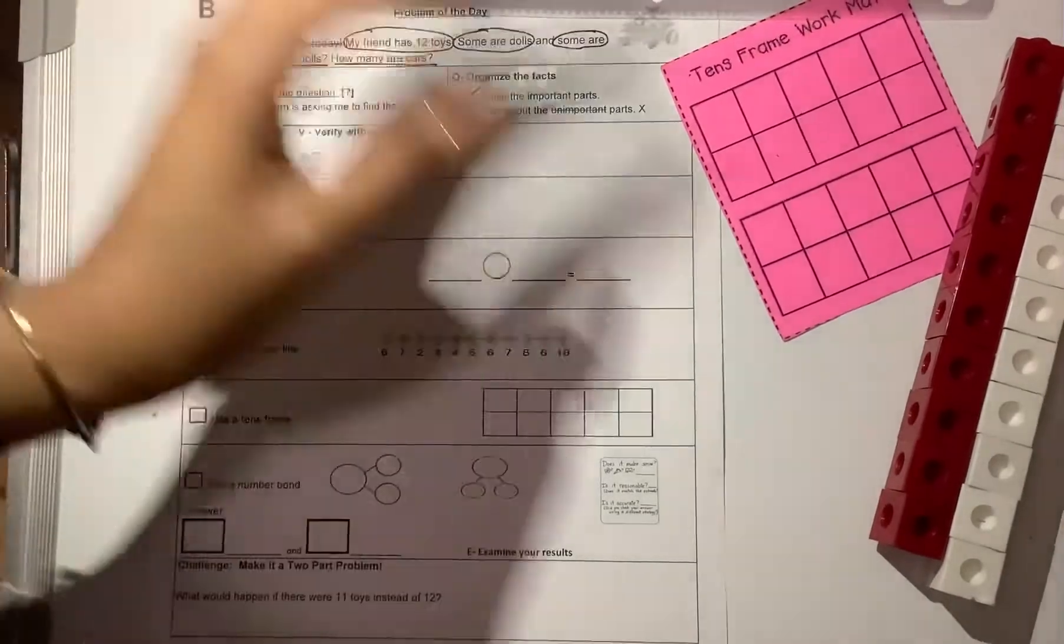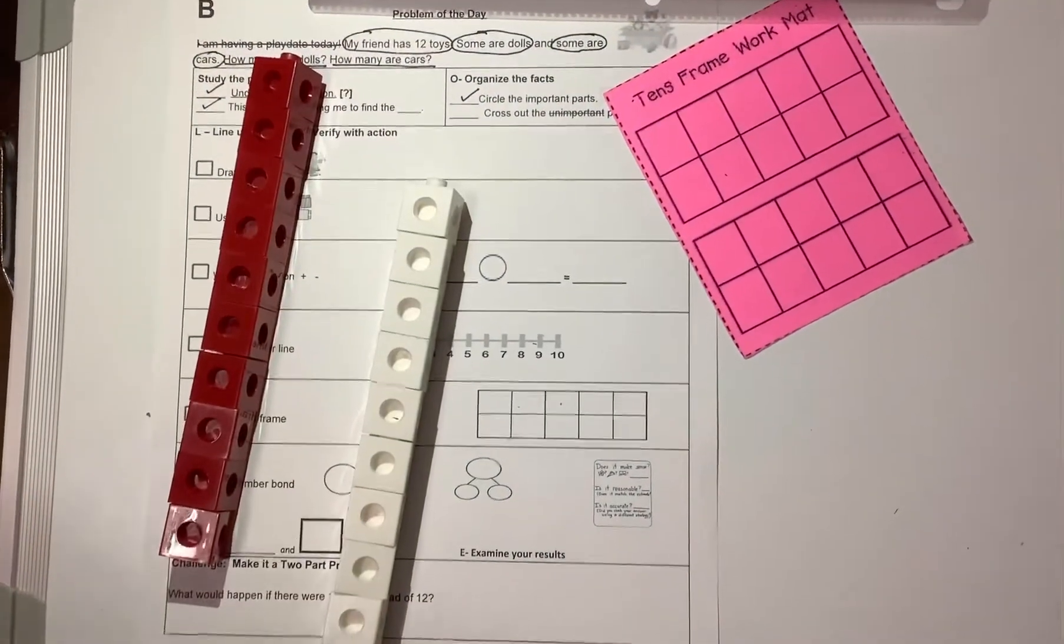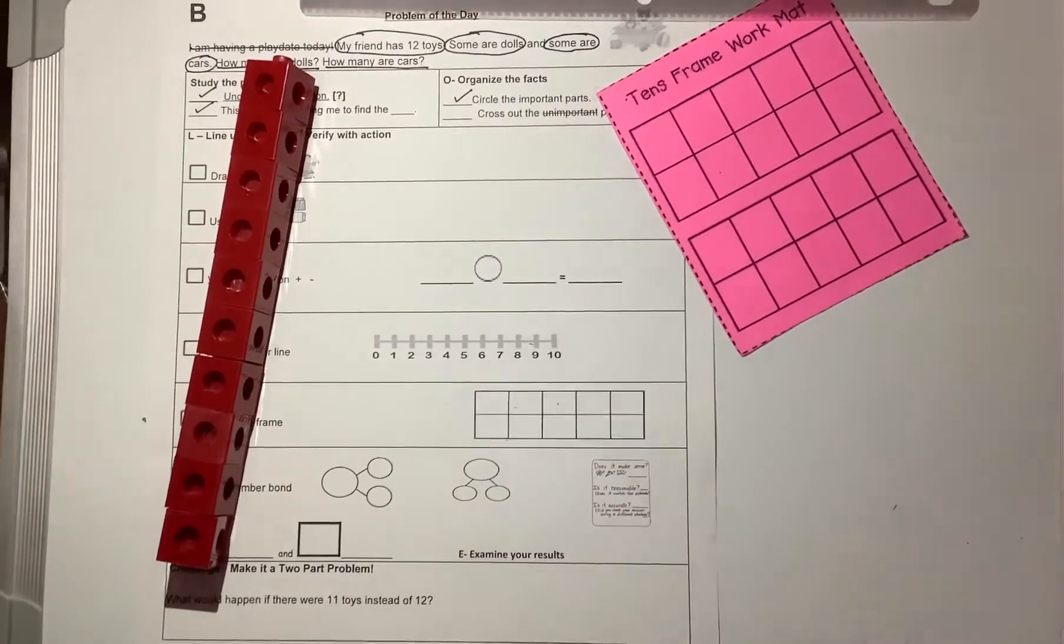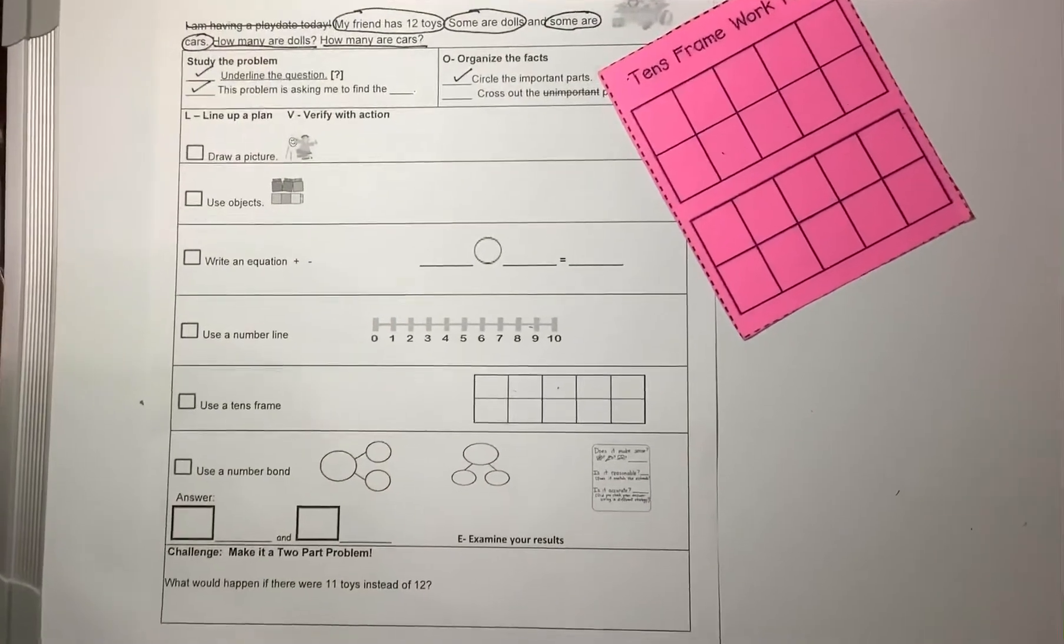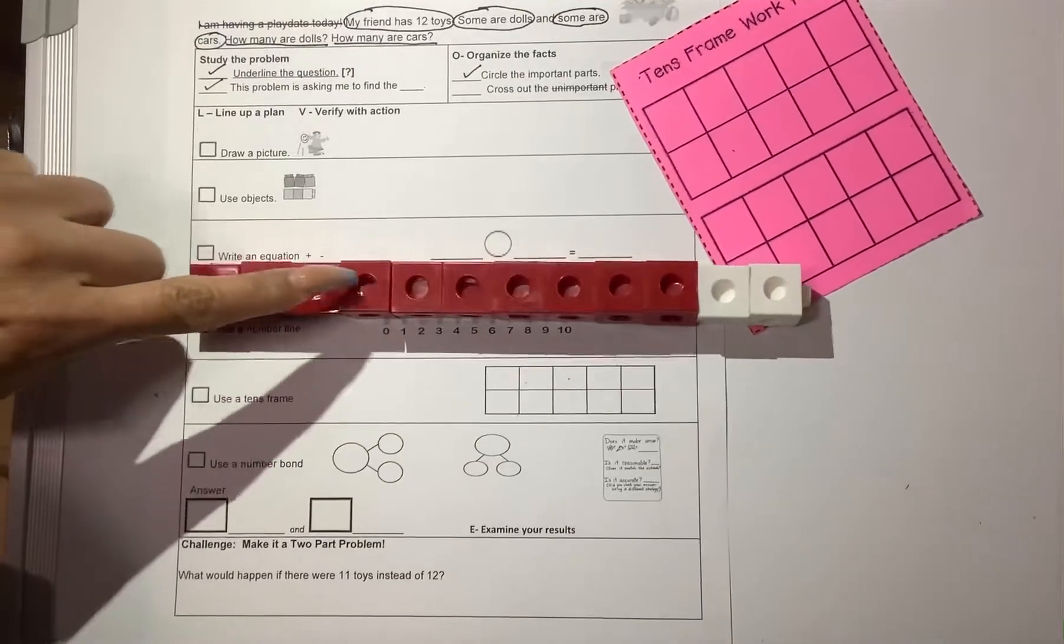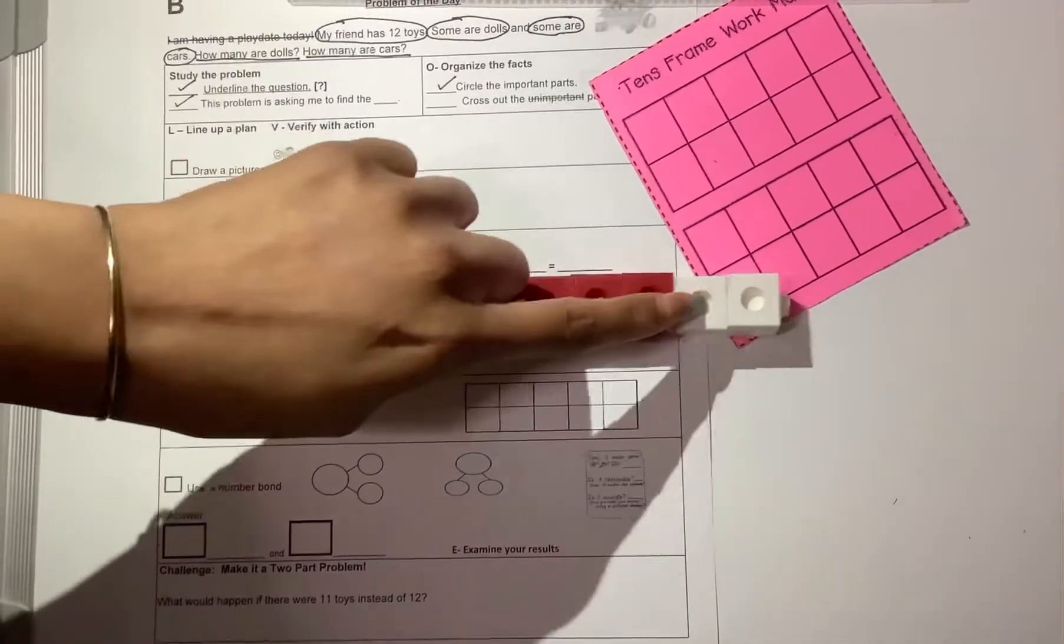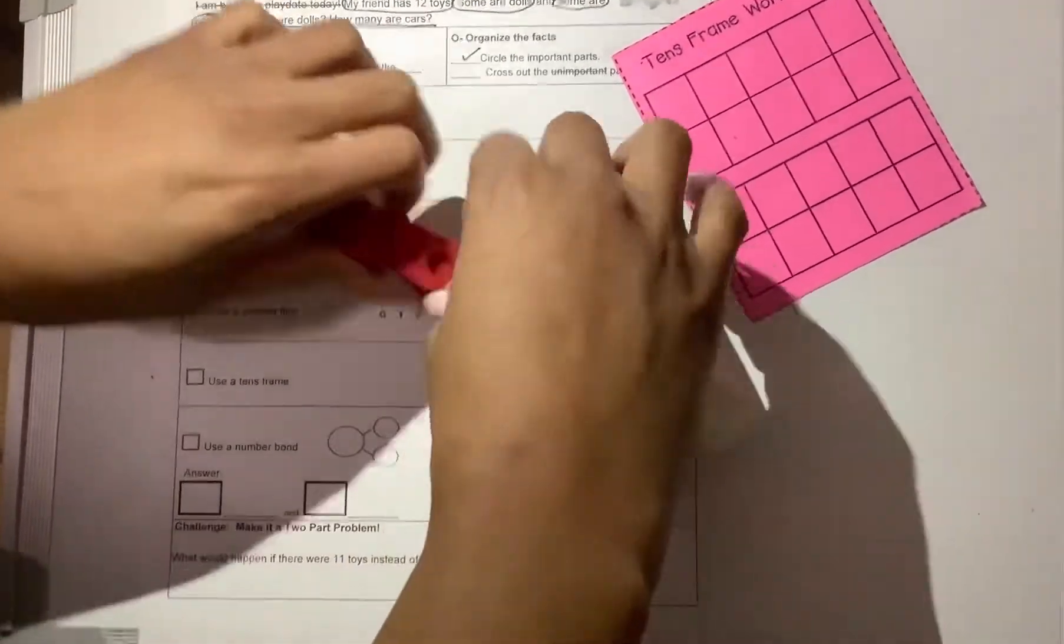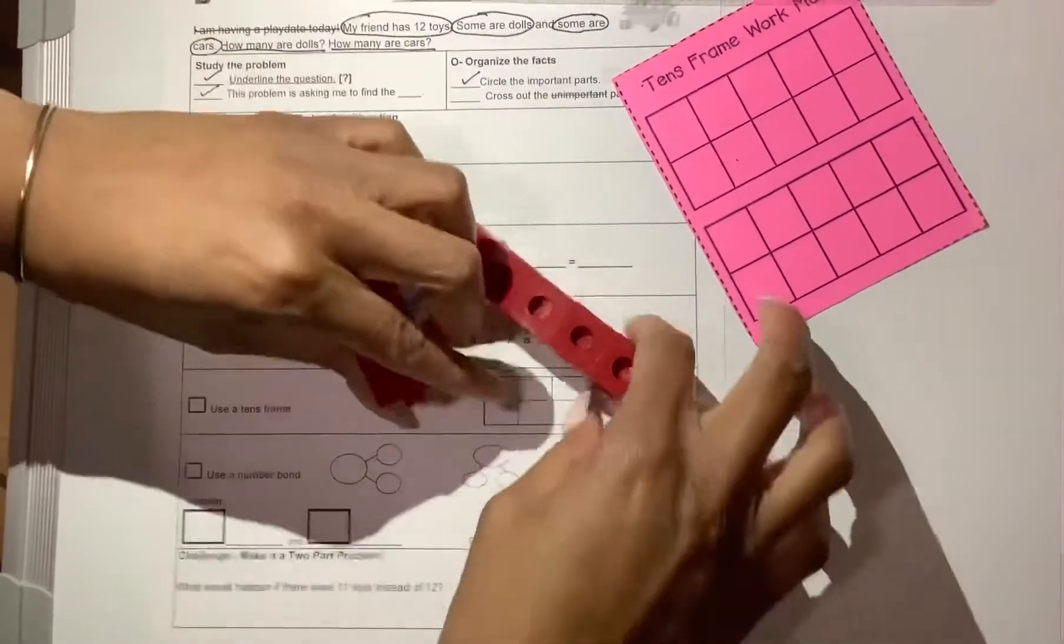Let's move on to our cubes. So we need to have 12. So I'm going to show you 12 cubes: 1, 2, 3, 4, 5, 6, 7, 8, 9, 10, 11, 12. And I'm just going to break my cubes. There we go. So I have two parts.